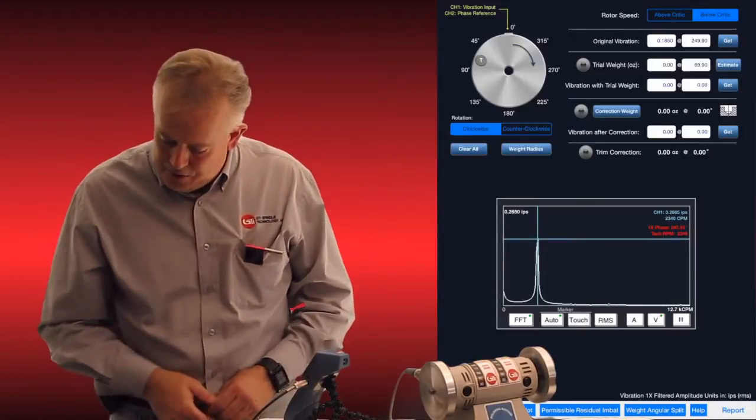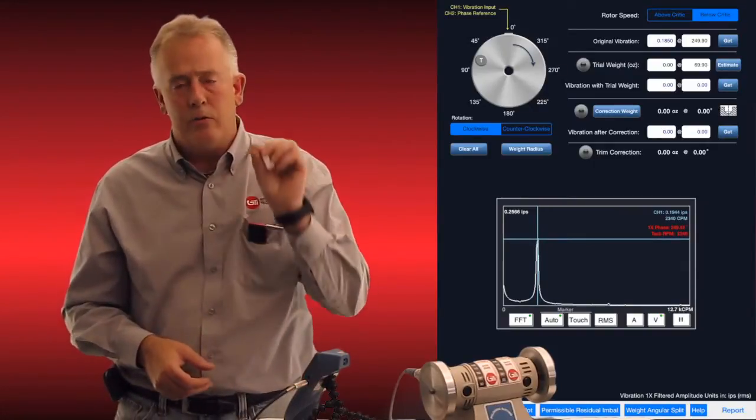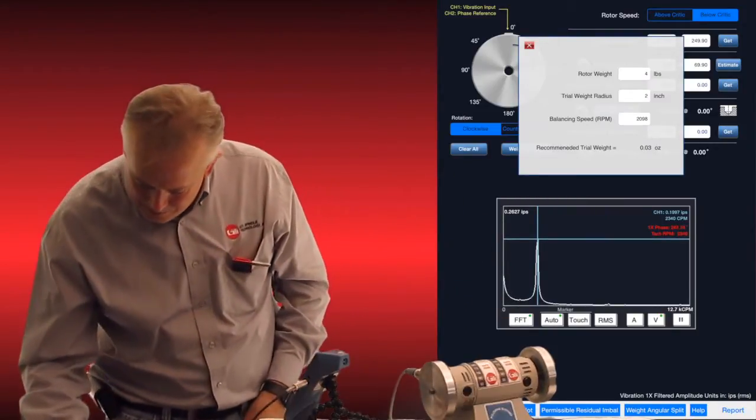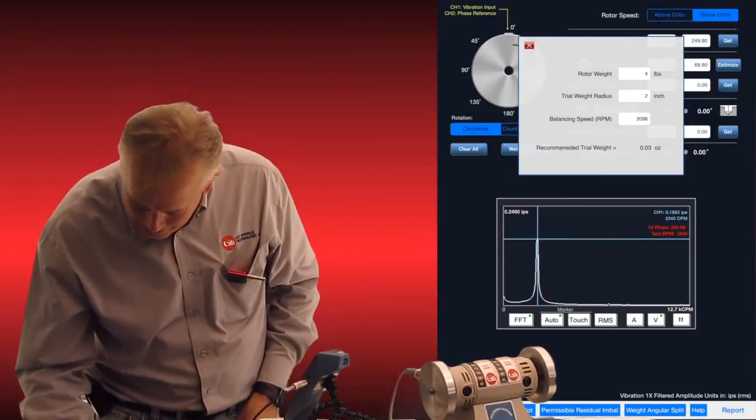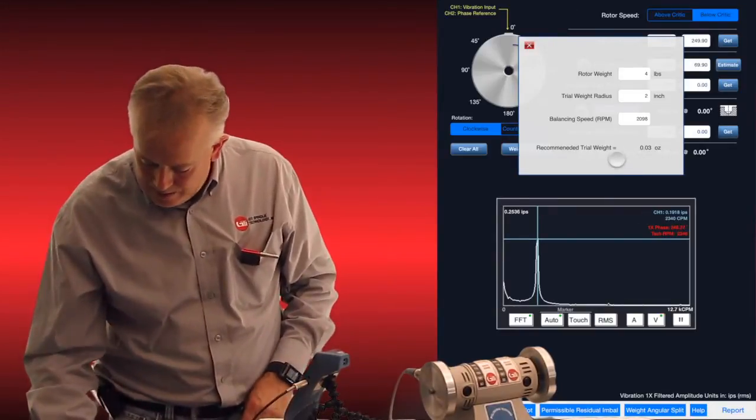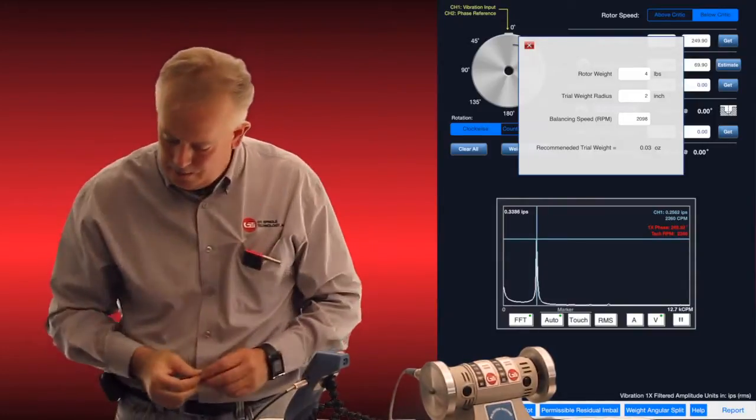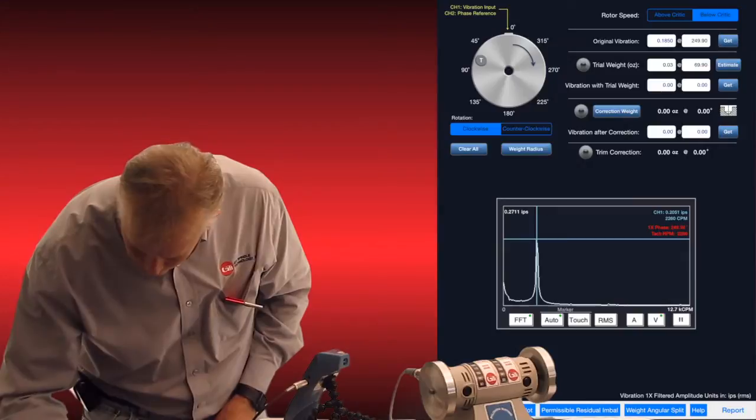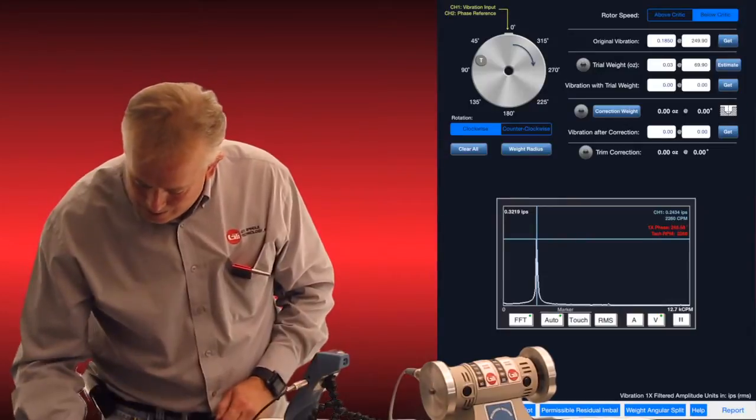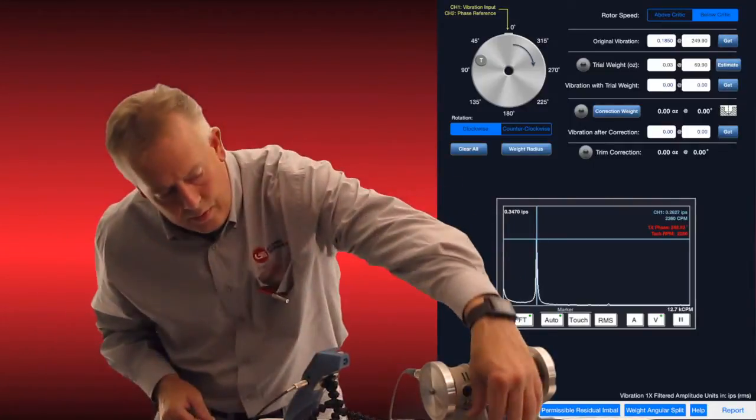So we've now hit our first prompt, and it's told us that at 69 degrees, it wants me to enter a trial weight. So let's go to the estimate button. And I've estimated this rotor to be about four pounds. There's a two inch trial radius and a balancing speed of around 2000 RPM. And it's telling me at the very bottom here, it's recommending 0.03 ounces, which is exactly what the screw weighs I've weighed on this scale. So we will make sure that we type 0.03 ounces, and it wants me to put it at 69 degrees. So we'll turn this motor off.